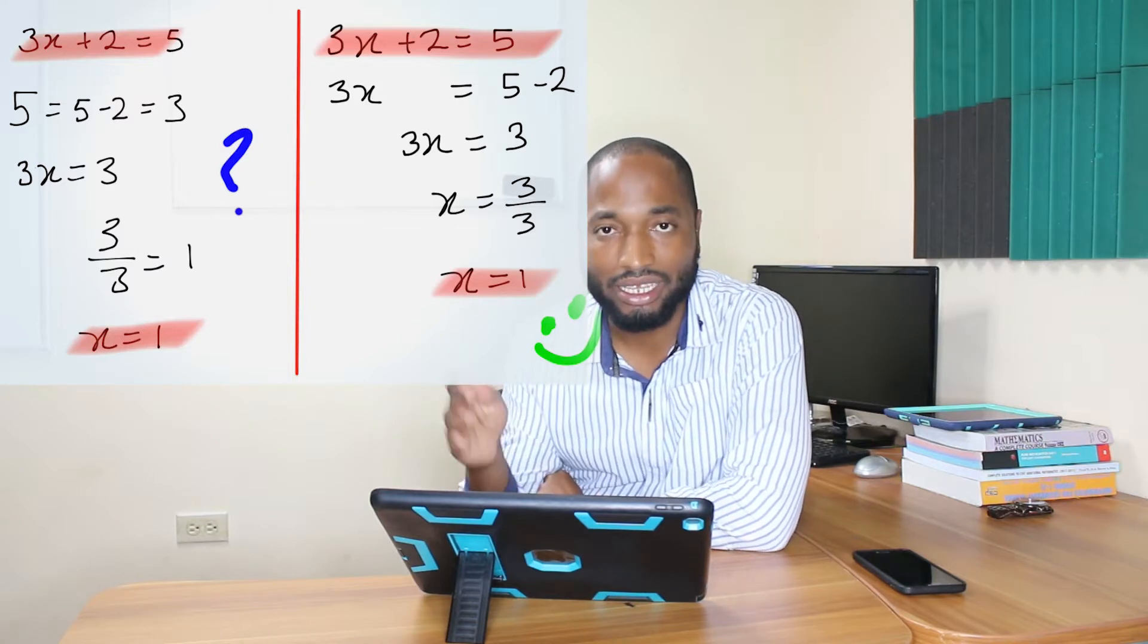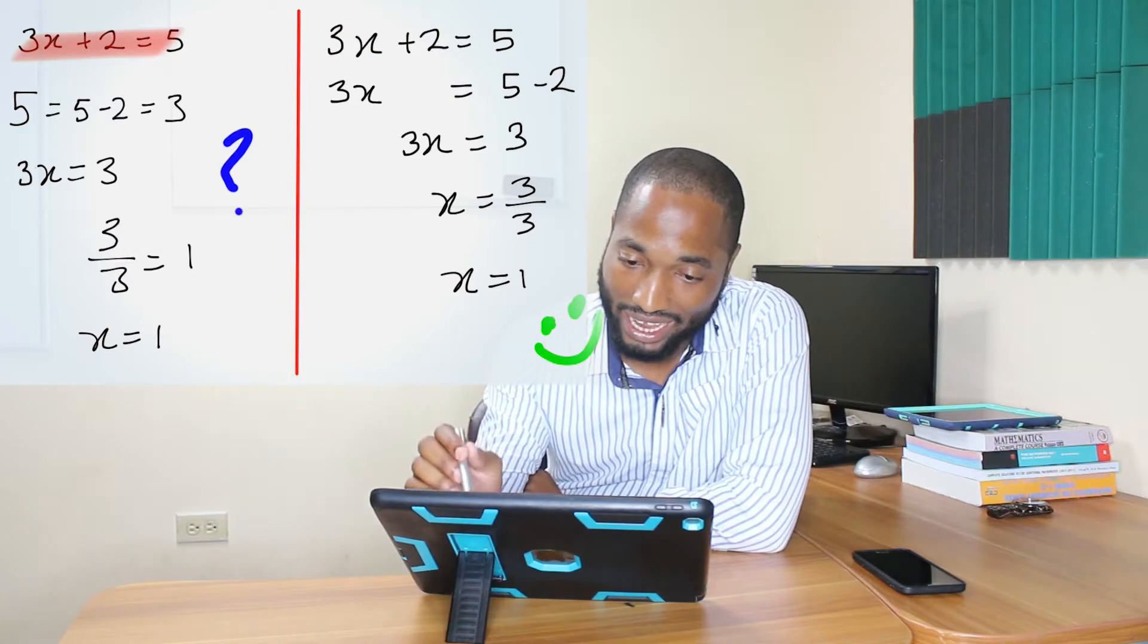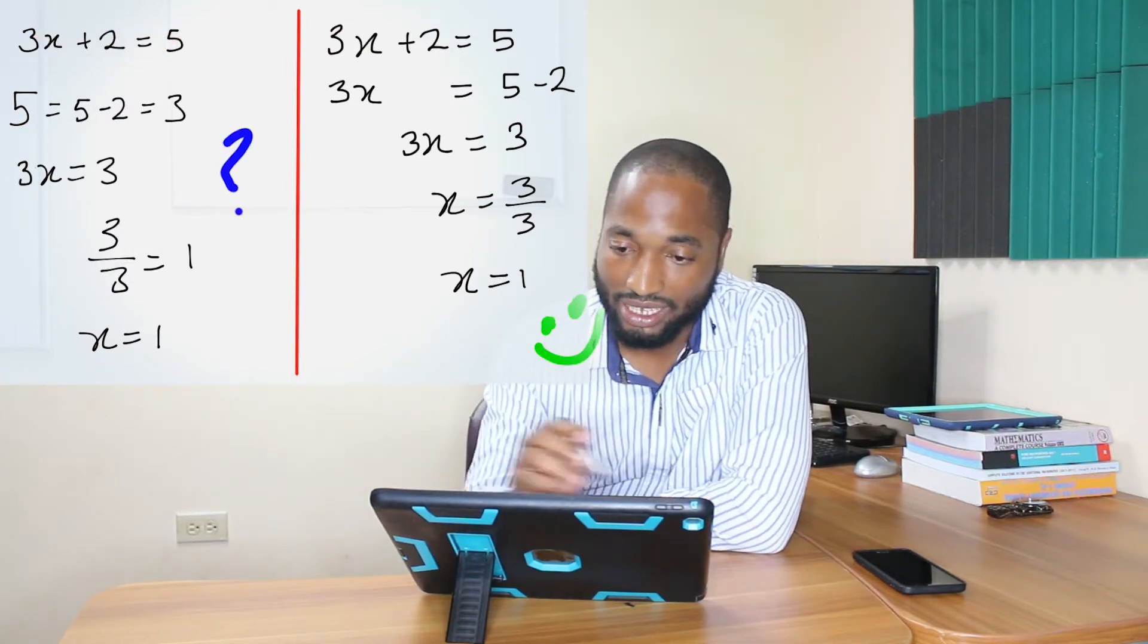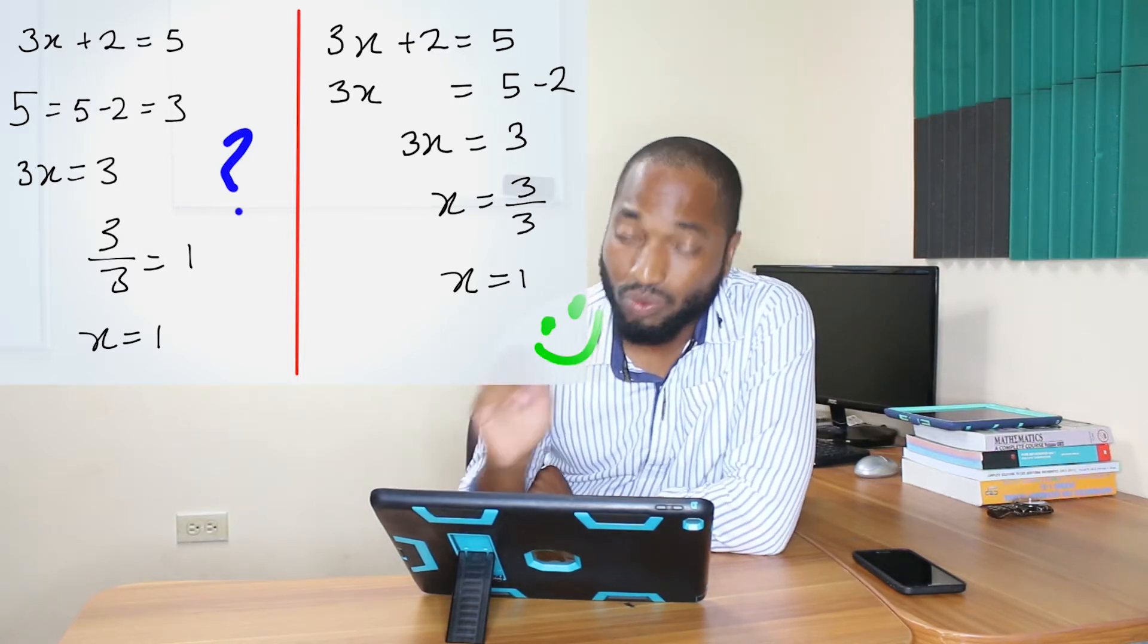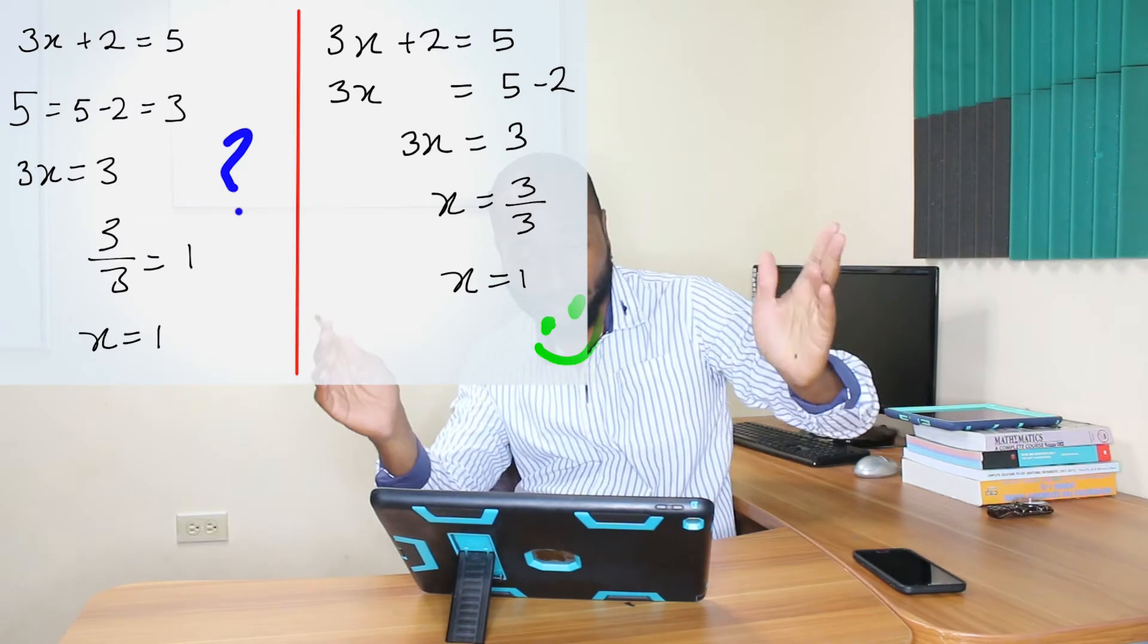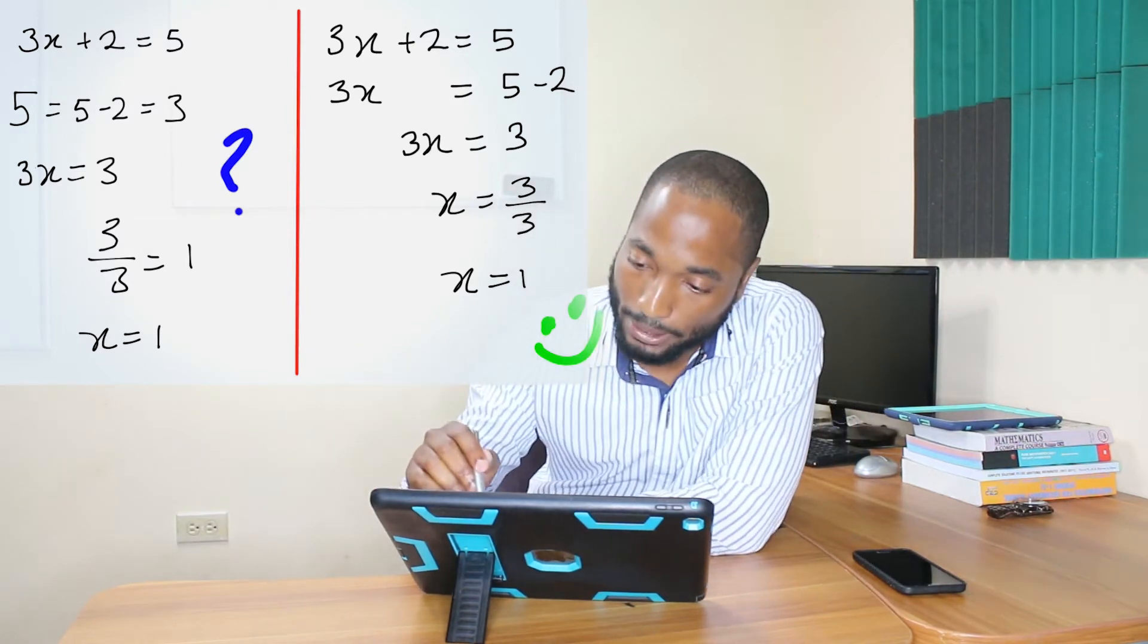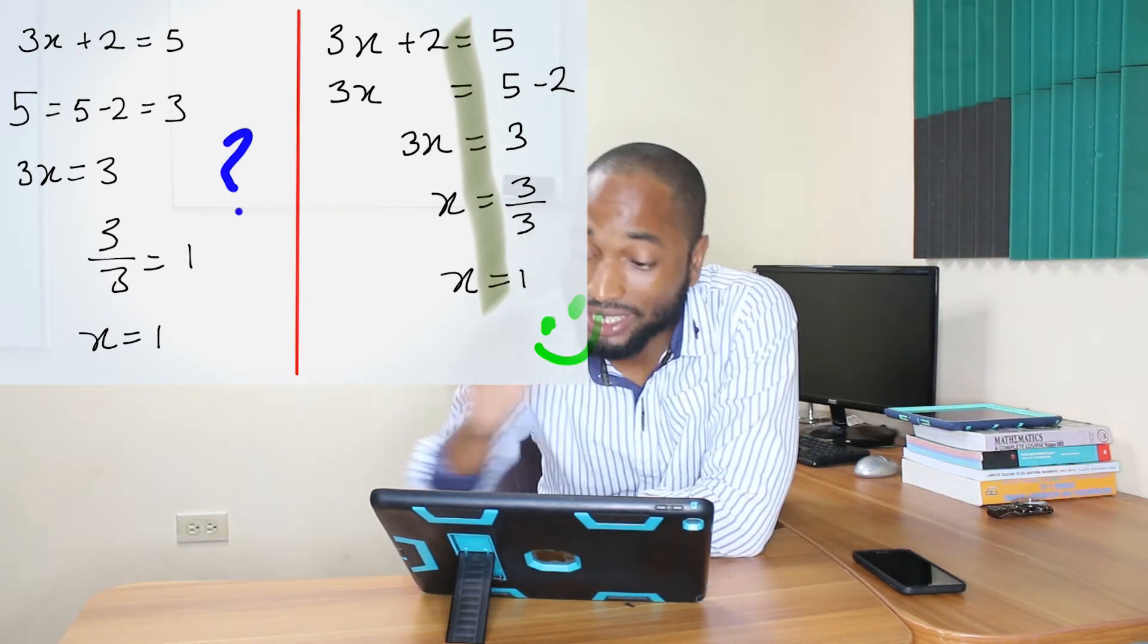Other than my terrible handwriting, what is different? The left-hand side is in a mess and this is what will get your teacher mad. When you're making your statement in mathematics, this is a pro tip: when you're making a statement in mathematics, always keep the equal sign under each other vertically.